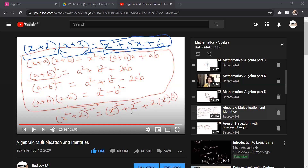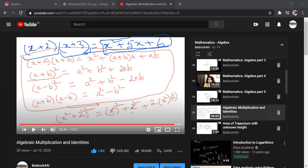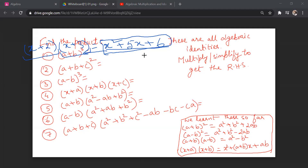In this class we'll move on to learning a few more identities, and then once we know these identities we are going to use them to learn factorization. Given an expression in expanded form, we should be able to use the identities to write the factorized form — representing it as a product of expressions. These are the most commonly used identities I plan to cover today.